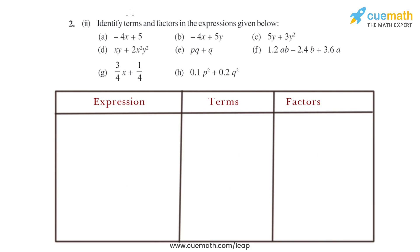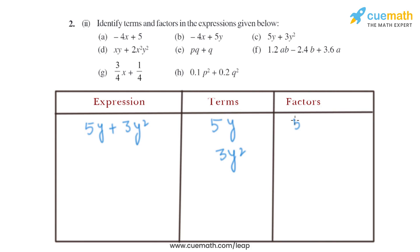Now let's move on to part C. The expression given is 5Y plus 3Y square. The terms are 5Y and 3Y square. The factors of 5Y will be 5 and Y. Similarly, the factors of 3Y square will be 3, Y, and Y — as it is Y square, there will be two Y's.